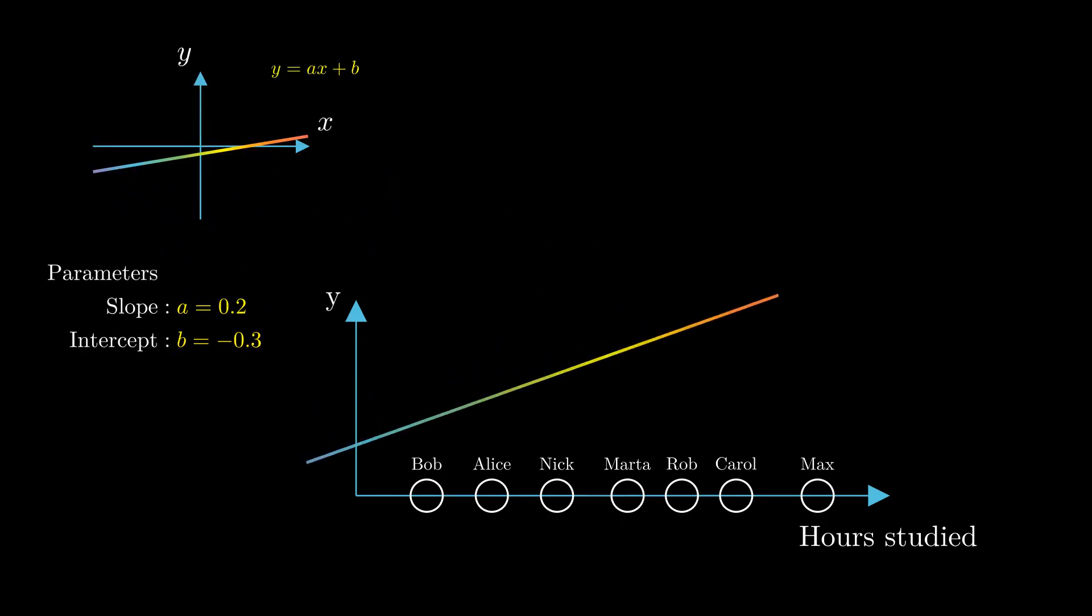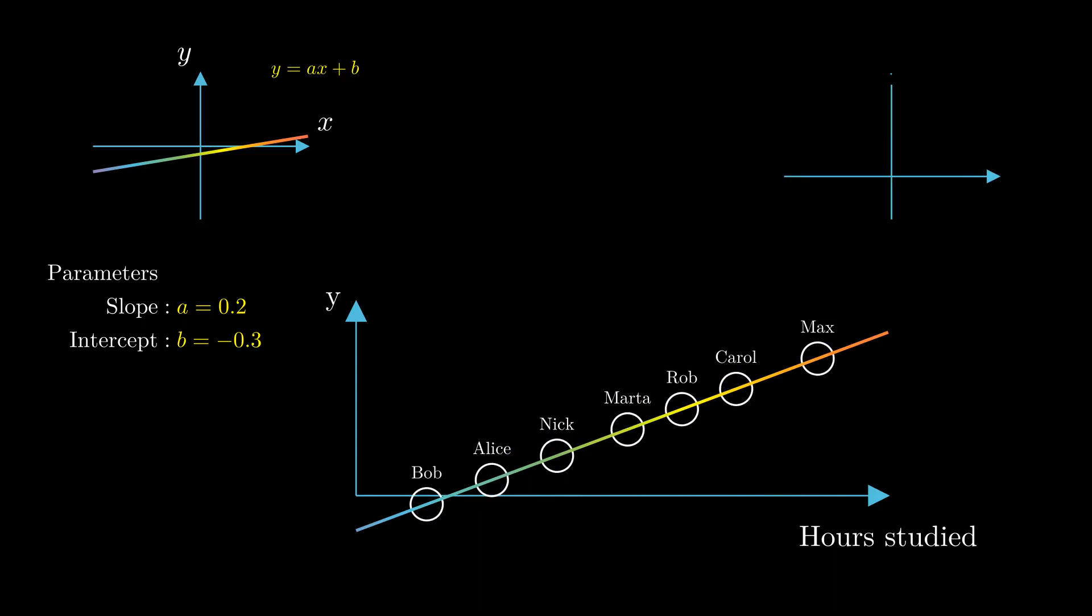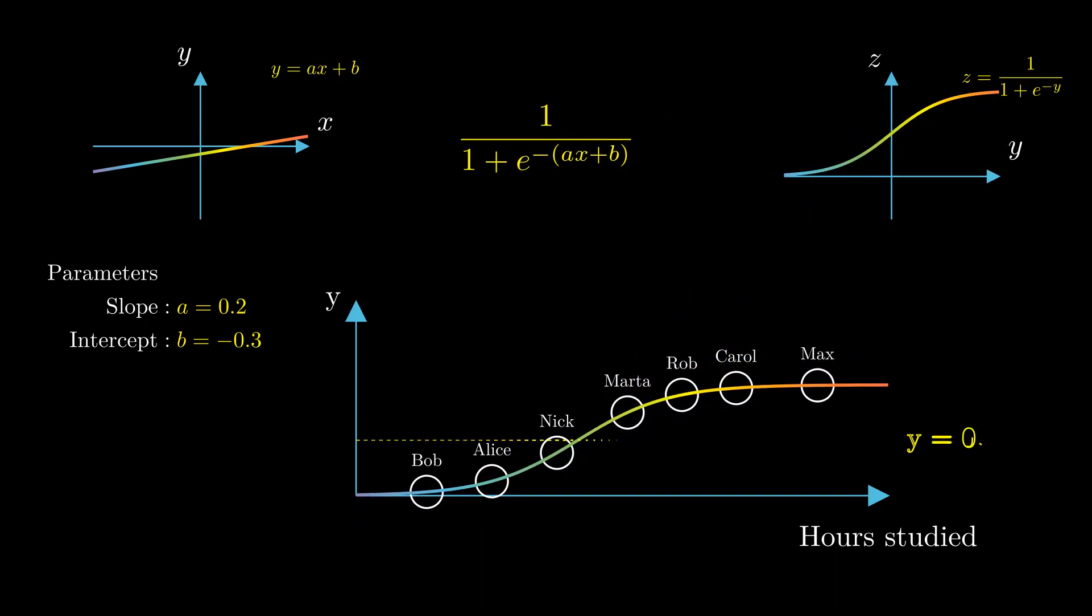In a nutshell, we first apply a linear function to the data, then transform it using the sigmoid, and finally predict pass for all students that ended up above level 0.5 and fail for everyone below it.